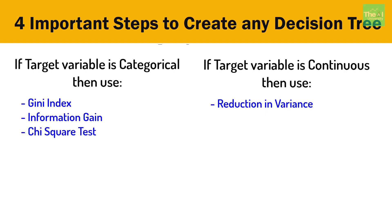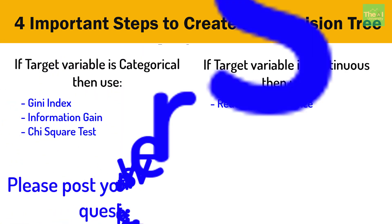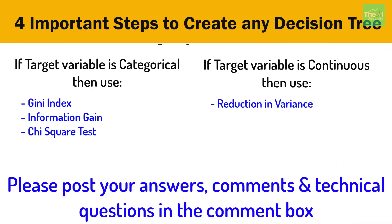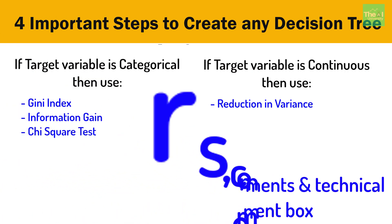So folks, this is it for this video. In the next upcoming video I will cover one of the most important decision tree algorithms called Gini index. I am going to explain this algorithm using a mathematical example in a simple way, so stay tuned. Here is today's question — state true or false: if the target variable is categorical in nature, then we use either Gini index, chi-square test, or information gain algorithm for decision tree classification. Please post your answers in the comment section below.